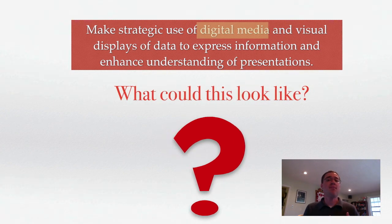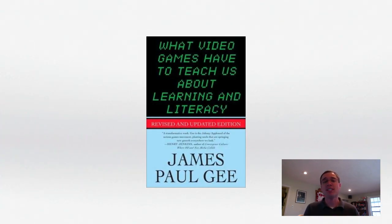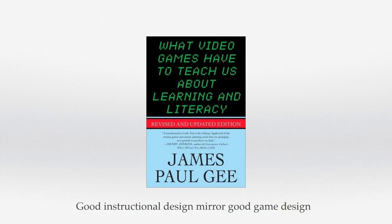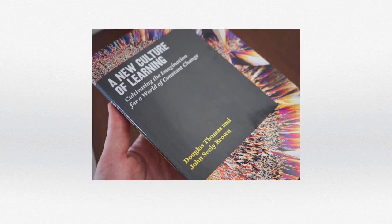So what could this look like? According to 'What Video Games Have to Teach Us About Learning and Literacy' by James Paul Gee, good instructional design mirrors good game design. In other words, we should get learners right into the action immediately — get them wrestling with concepts, taking images, taking video, capturing audio — basically starting with the tools they're going to use to present their learning later, rather than waiting until they've mastered a concept before thinking about how to present it. And then there's 'A New Culture of Learning' by Douglas Thomas and John Seeley Brown, which talks about explorative play — we're not just passively receiving, we're actually building knowledge in an environment conducive to tablets, video, audio, and imagery.